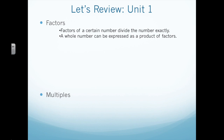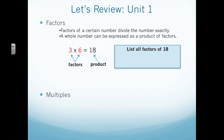Factors of a certain number divide the number exactly. A whole number can be expressed as a product of factors. So, 3 times 6 equals 18. 3 and 6 are factors, and 18 is the product.